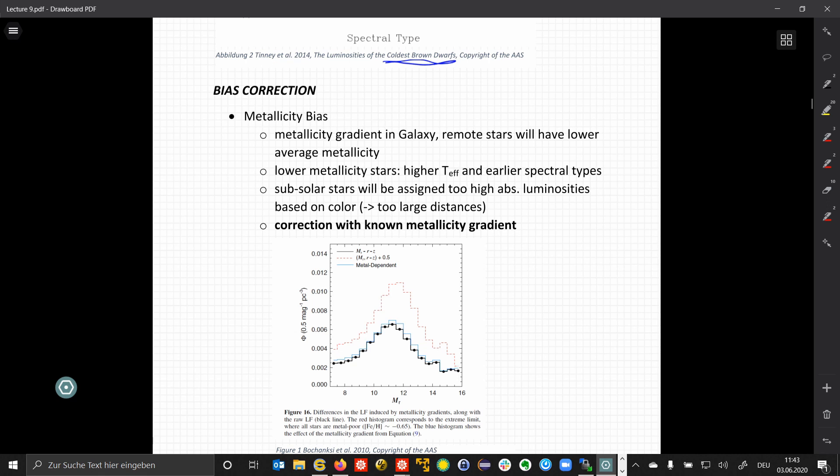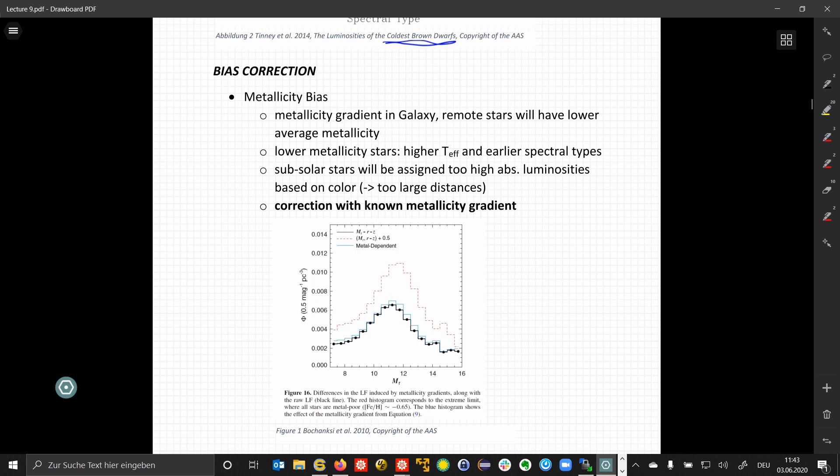To correct this, we need to assume a metallicity gradient that needs to be determined independently, and the effect is shown here in this figure, where the points are the originally measured luminosities here, and the two lines, the red and the blue line, show two different corrected luminosities, based on two different assumed metallicity gradients.